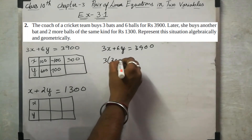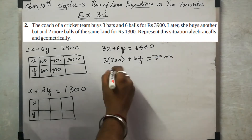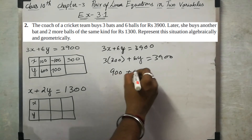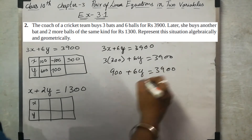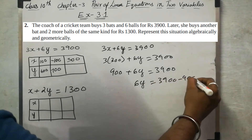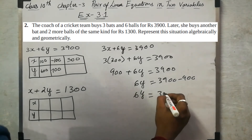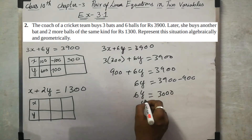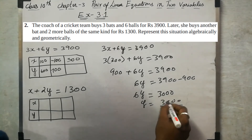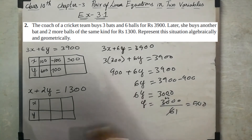Now let x equal to 300. Then 3 into 300 plus 6y equals 3,900, so 900 plus 6y equals 3,900, so 6y equals 3,900 minus 900, giving 6y equals 3,000, therefore y equals 3,000 divided by 6, which gives y equals 500.